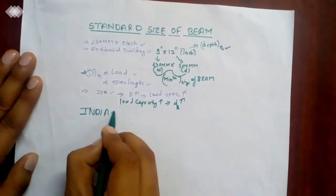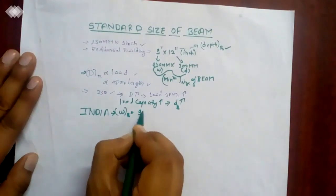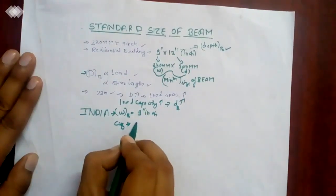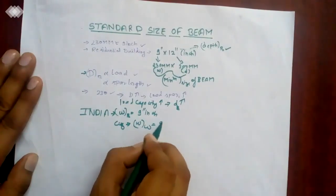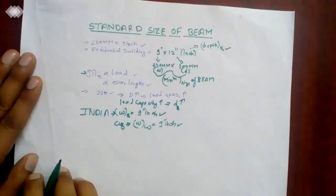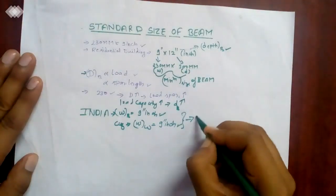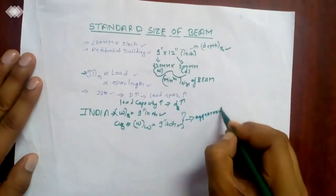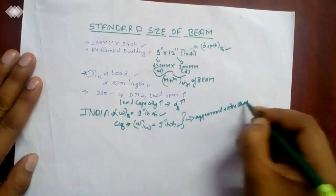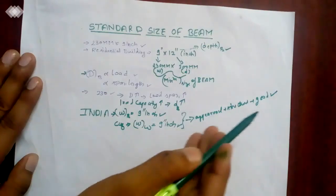So in India, if we talk about my country India, we kept width as 9 inches because the reason is width of wall is also 9 inches. This is the main reason and what comes out from this: the appearance of the structure will be good, the appearance of the structure comes out to be good.